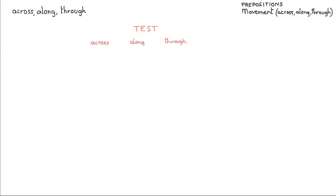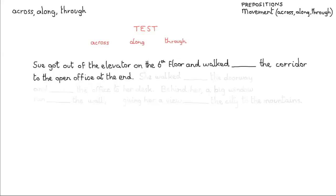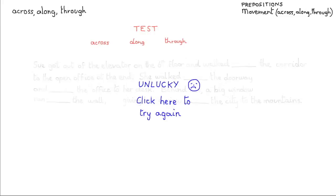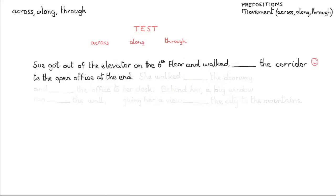Here's the passage with the first sentence highlighted: 'Sue got out of the elevator on the sixth floor and walked the corridor to the open office at the end.' Think about that and make your choice. The answer is: along — she walked along the corridor.